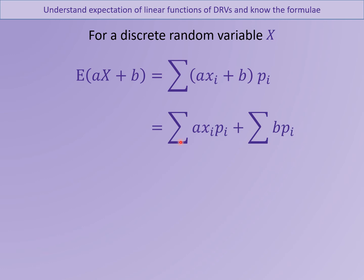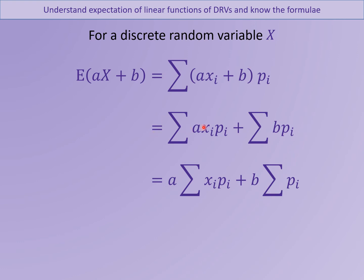The formula would be the sum of each AX plus B value multiplied by its probability. We can calculate these separately: the sum of AXᵢPᵢ and the sum of B times Pᵢ. We've expanded the bracket and split it into two separate sums. Because A and B are constants, we can pull them to the front of each sum — adding up all the XᵢPᵢ values and multiplying by A, and adding up all the probabilities and multiplying by B.